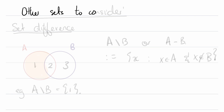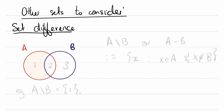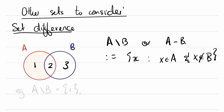There are other sets to consider, and you'll have plenty of practice. First, let's talk about the set difference. Say we've got our A and B as before, with the numbers 1, 2, and 3. A minus B, denoted in two different ways, is the set containing objects x such that x is in A but x is not in B. In this case, what's in A but not in B is just the element 1, so the set difference A minus B is {1}.